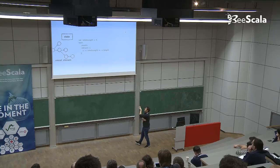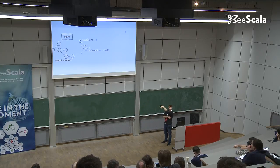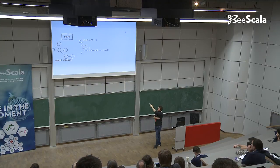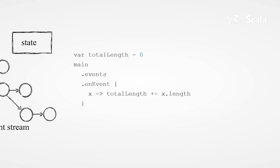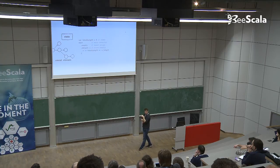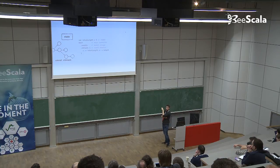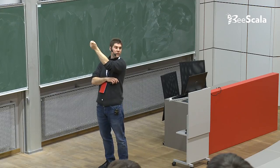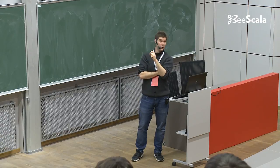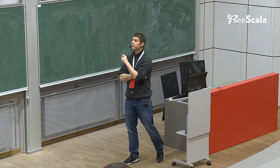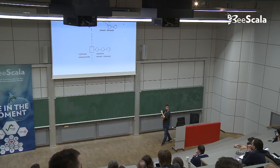An event stream is an entity inside the reactor on which you can observe incoming events. When an event arrives from the outside world, you can react to it, typically by modifying the reactor's internal state. For example, every reactor has a main connector by default. To observe events on it you call dot events on the connector, then call onEvent with a lambda — here, receiving a string, taking its length and adding it to totalLength.